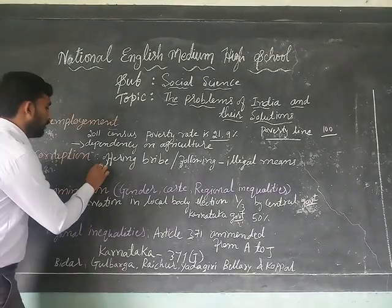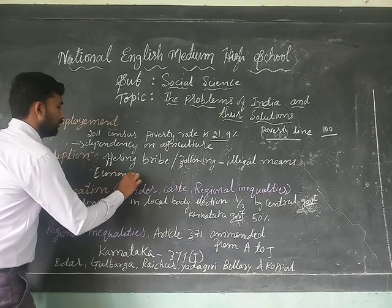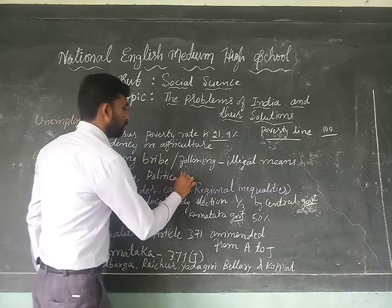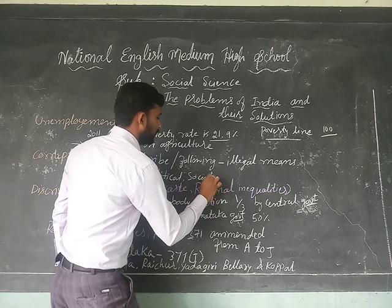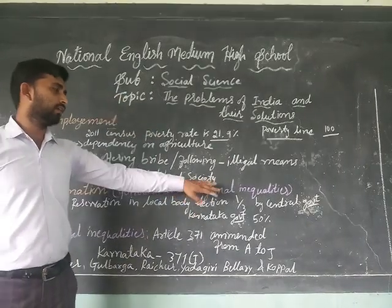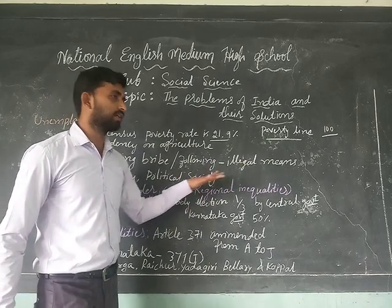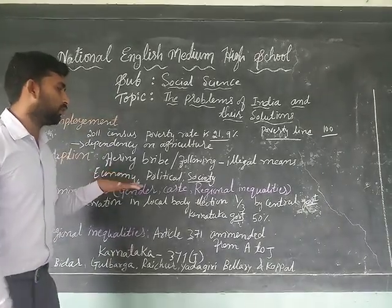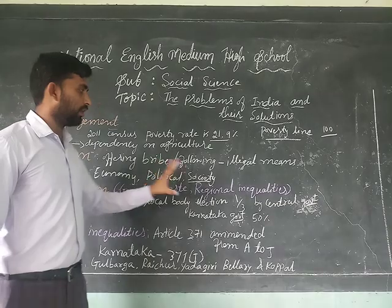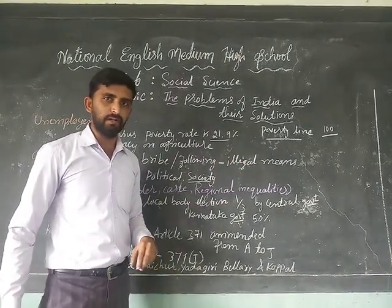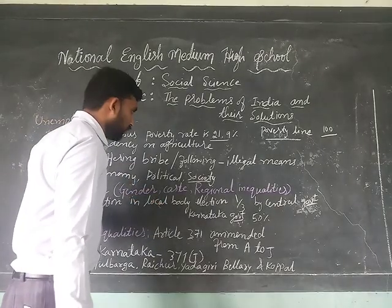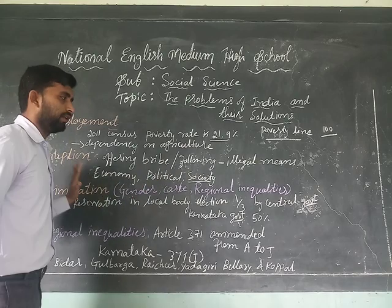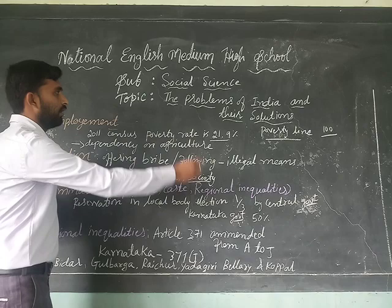Corruption is affecting the economy of India, the political system of India, and society itself. When leaders and young people are involved in corruption, children also learn this behaviour and it develops in them for the future. That is why we have to think about the future. It is affecting all processes and directly harming India itself.